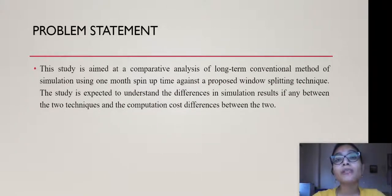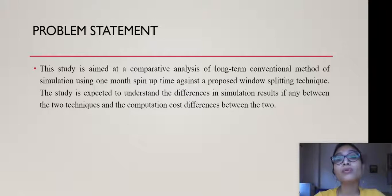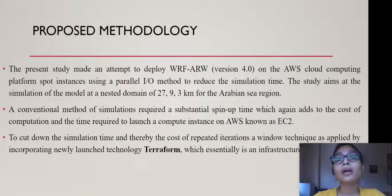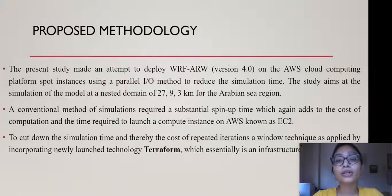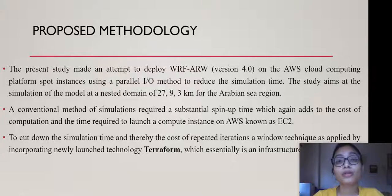The proposed problem statement is to do a comparative analysis between two simulations. One is the conventional method using one month of spin-up time given to the model. For example, if you are planning to run the model for July 2018, you initiate the run from June 2018 and run continuously through July 2018. That first month of simulation is rejected as spin-up, which is the time given to the model to stabilize, so you can only use the simulation results from July 2018.